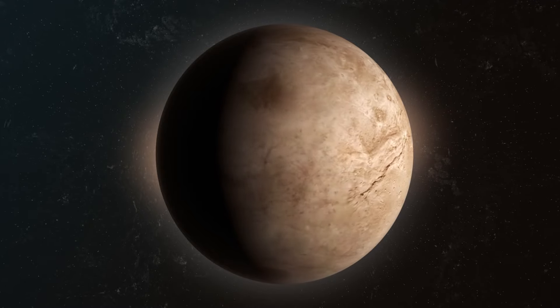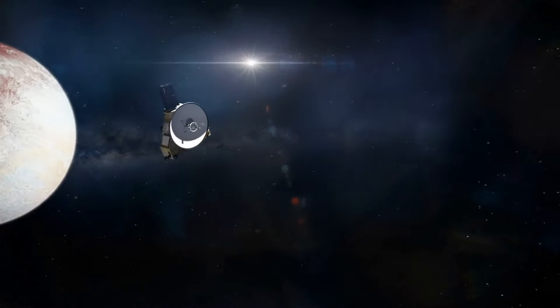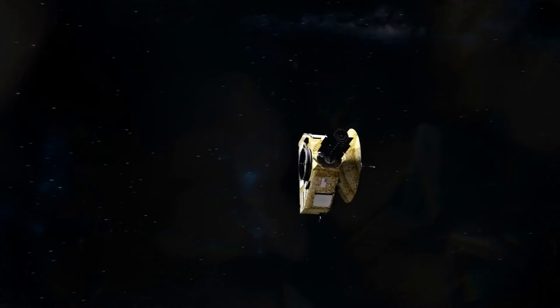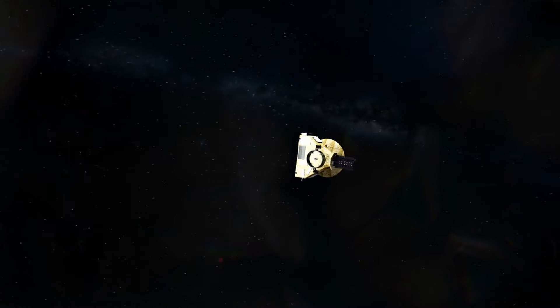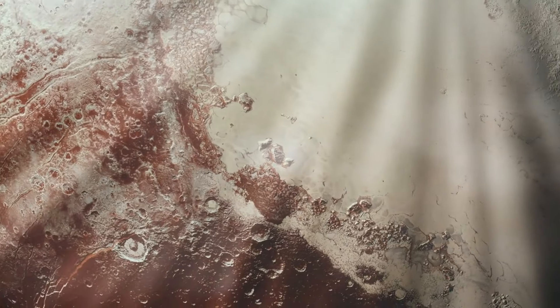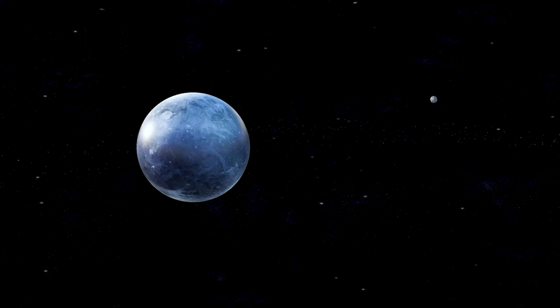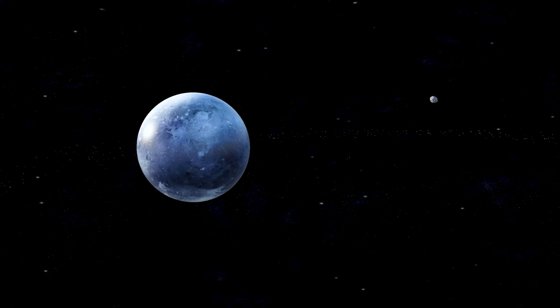The recent discovery of surface movements on Pluto, coupled with findings from the New Horizons mission, paints a vivid picture of this icy world. New Horizons provided the first close-up images of Pluto, revealing a landscape marked by nitrogen ice, towering mountains, and potential ice volcanoes. These features suggest an active geological history, far from the static image once associated with dwarf planets.